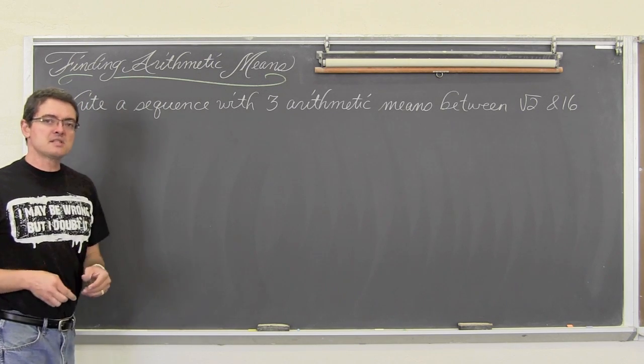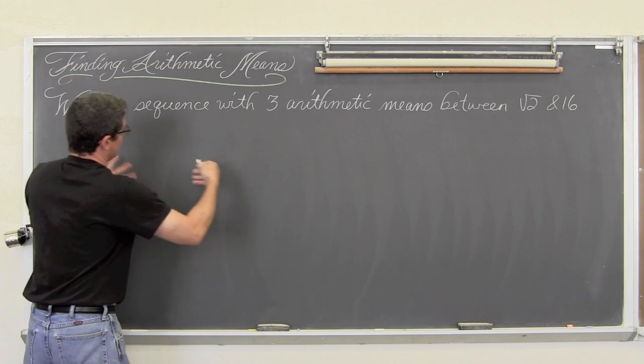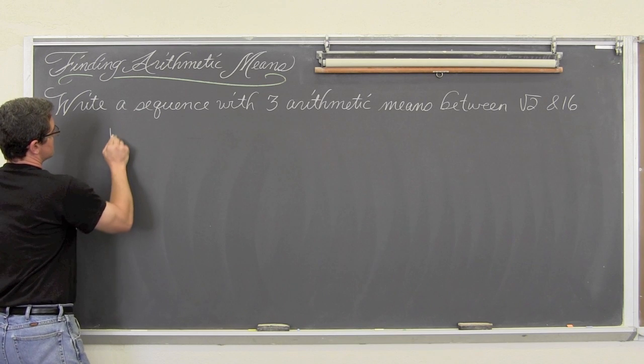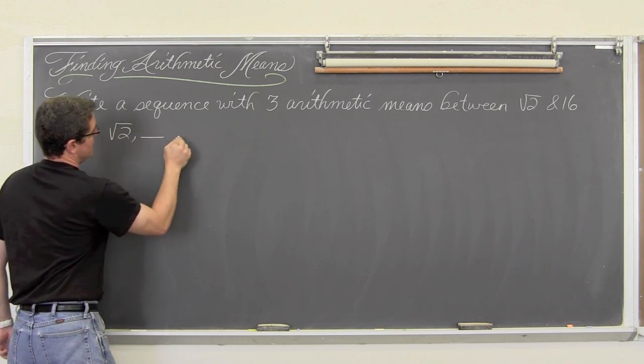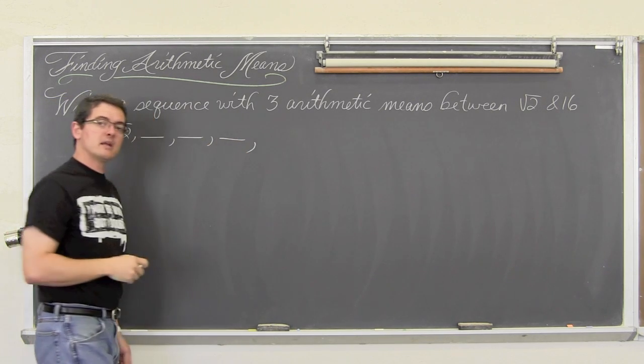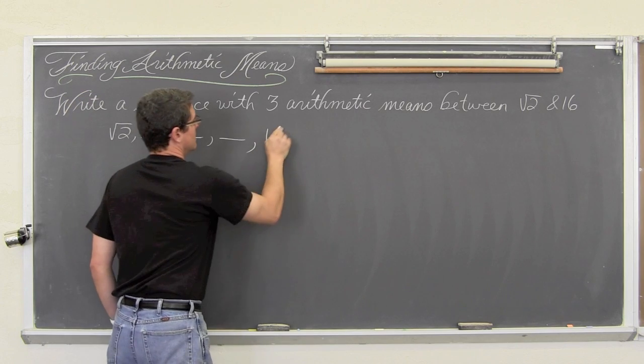Now I am just going to list these out. I am going to leave the blanks in the sequence. We have the square root of 2, we have 3 arithmetic means, and the last term is 16.